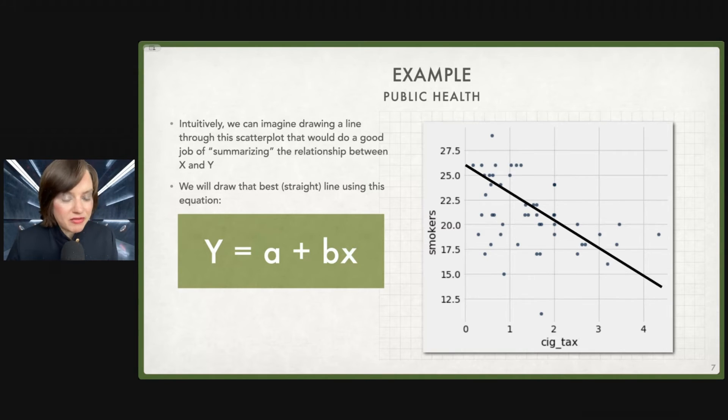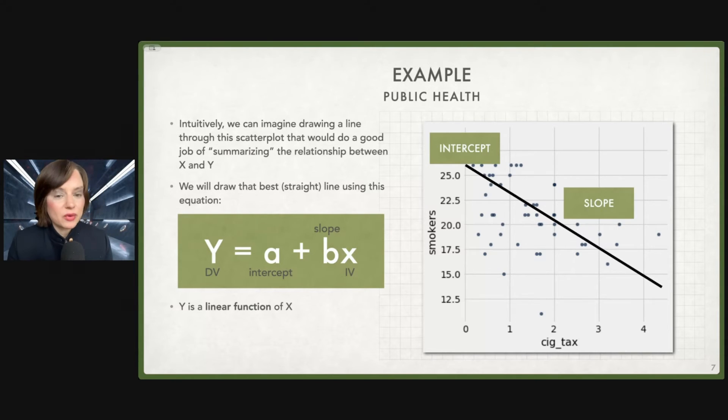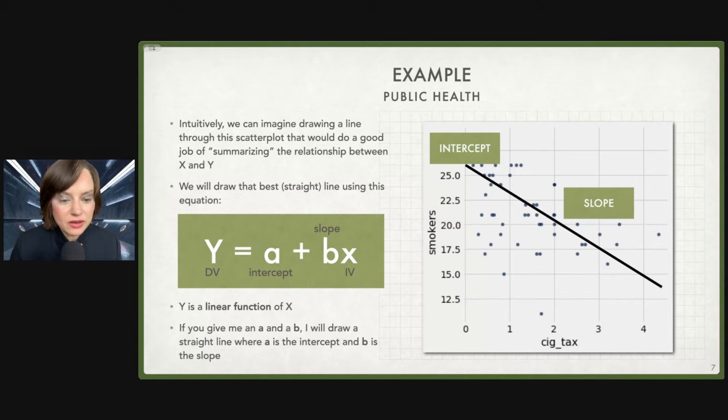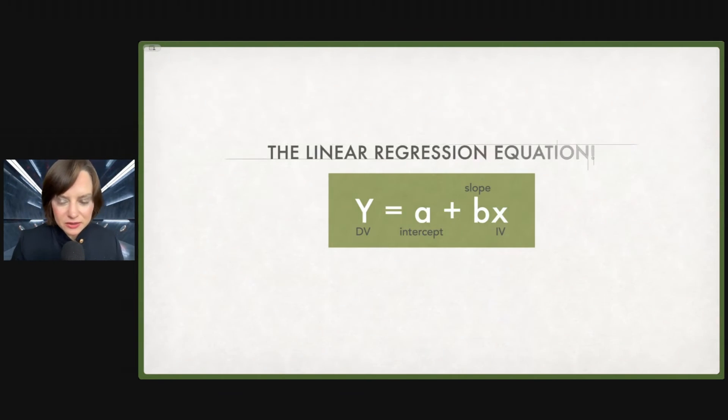Dust off your old memories of algebra class because you've seen this before. This is how we calculate the slope of a line. You probably saw it as Y equals MX plus B. So that's where we're going to start. The Y here is our Y variable equals A plus BX. So Y is our dependent variable. A is the intercept, the value for Y when X is zero. And then BX is going to tell us the slope. So B is the slope of that line, and X is the value for our independent variable. If you give me an A and a B, I can draw this line.